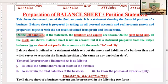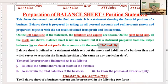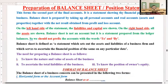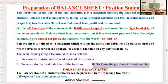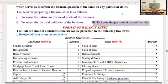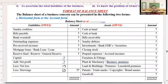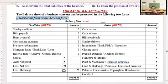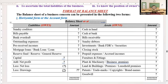The balance sheet has two sides: the left side represents liability and capital, and the right side represents assets — because it is not an account. We prepare it to know what type of assets and liabilities the business possesses, the total obligations, and the final status of the investment done by the owner. Balance sheet has two formats: horizontal and vertical. For trading and P&L we write 'for the year ending'; for the balance sheet we write 'as at' a specific date.